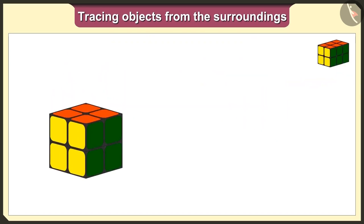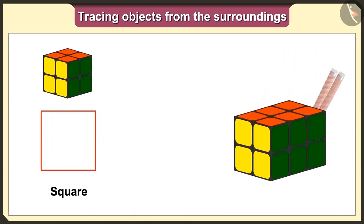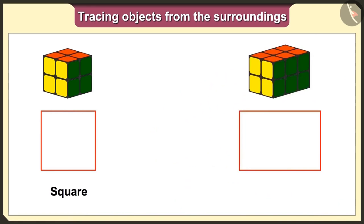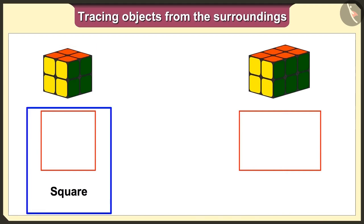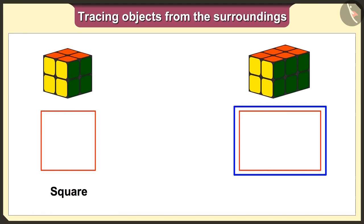If we keep this cube toy on paper and trace it, we will get a big square shape like this. And if we keep this cuboid toy on paper and trace it, we will get a big square shape like this — wait, Tallman. When we trace this cuboid toy, we do not get a big square shape, but we get a rectangle shape.